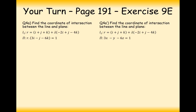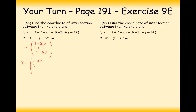Let's have a go at this question — find the coordinate of intersection between the plane and the line. For L1, I'm going to write a combined vector between the position and the direction vector: 1 minus 2 lambda, 1 plus lambda, and 1 minus 4 lambda. Now I'm going to substitute that in as R into the equation of the plane, substituting in (1 minus 2 lambda, 1 plus lambda, 1 minus 4 lambda).